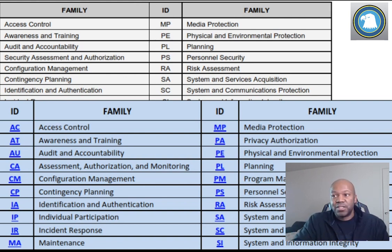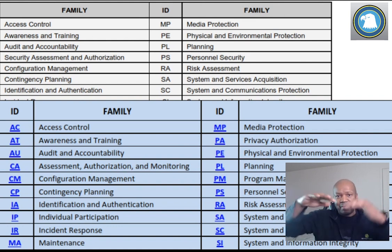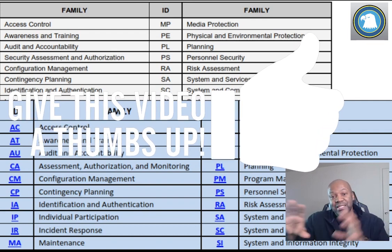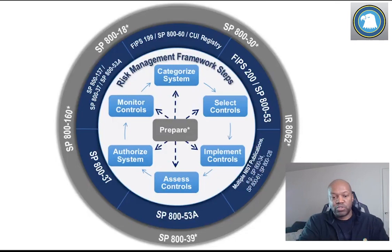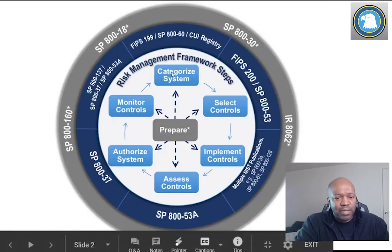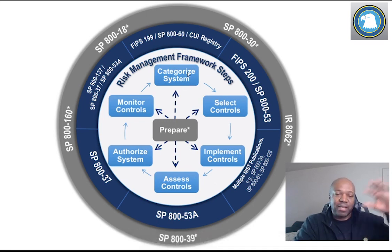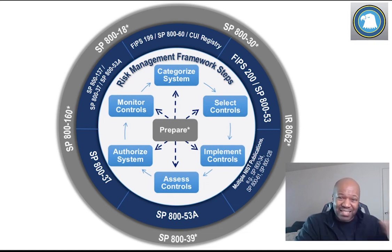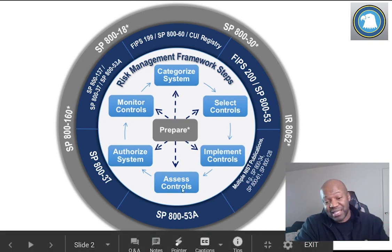Maybe you have STIGs — Security Technical Implementation Guides — walking you through everything, or maybe you have a script that puts everything in one part at a time so you don't lock the system out. Once all that's in there, the next step is to do an assessment. You didn't have to redo categorization because the system remains the same, but you've had to implement the controls again on this operating system, so you have to reassess those controls.